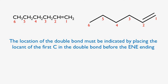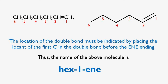Rule three. To complete the name of the alkene, the location of the double bond must be indicated by placing the locant of the first carbon of the double bond before the -E-N-E ending. Thus, since the double bond starts at carbon number one, we place number one before -E-N-E and the name becomes hex-1-ene.